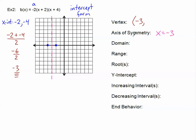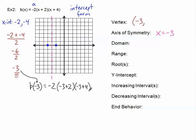Negative 3 is the x-coordinate of our vertex. Now I need to find the y-coordinate, so I evaluate b(negative 3). Don't forget the negative 2 out front: negative 2 times (negative 3 plus 2) times (negative 3 plus 4). That gives us negative 2 times negative 1 times positive 1. Negative times negative times positive is all positive: 2 times 1 times 1 equals 2. So our y-value is 2.